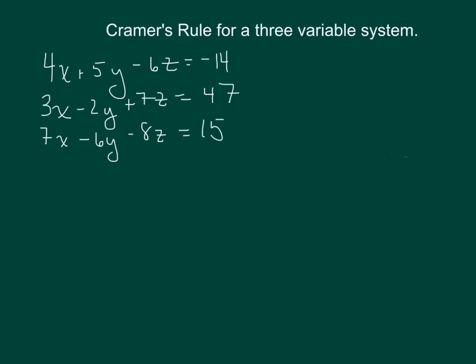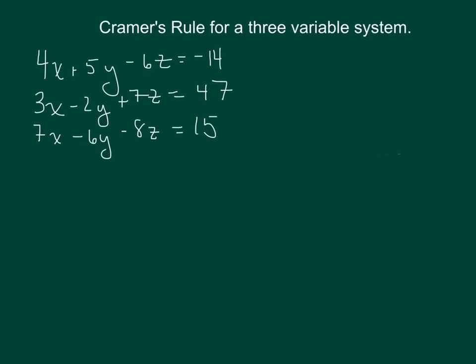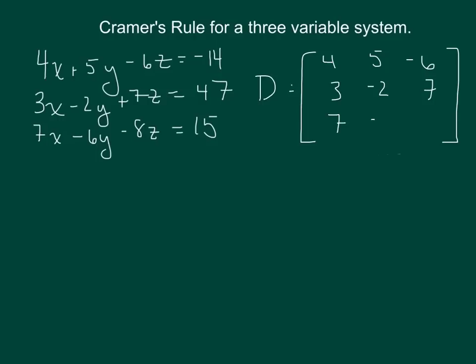We are going to have first the coefficient matrix, which we will call D. That coefficient matrix will have all the numbers that are in front of our variables. So we'll have four, five, negative six, three, negative two, seven, seven, negative six, and negative eight.